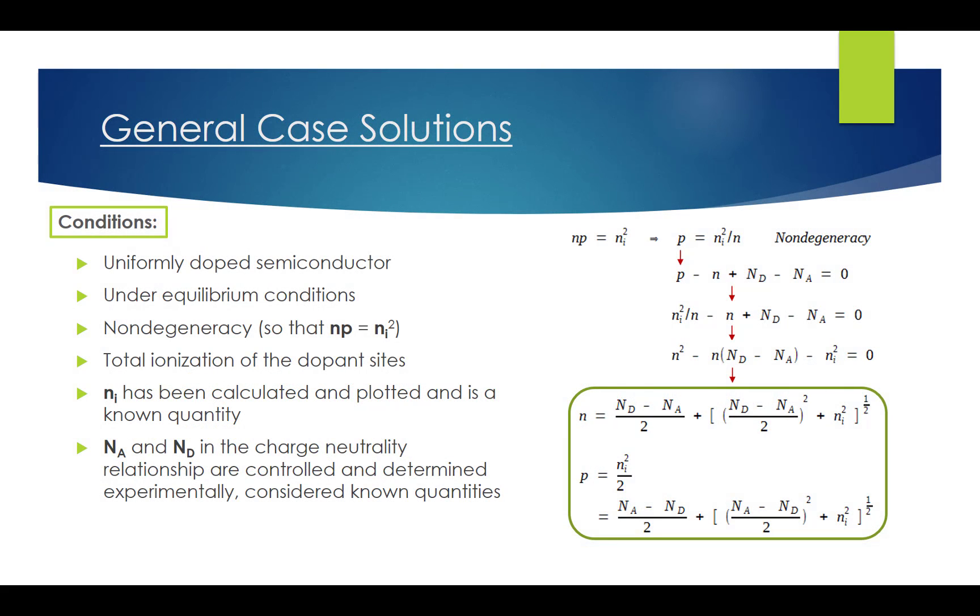The intrinsic semiconductor concentration ni has been calculated and plotted and is a known quantity. Also, the total number of donor atoms or sites per cubic centimeter Nd, and the total number of acceptor atoms or sites per cubic centimeter Na, both appear in the charge neutrality relationship, are typically controlled and determined experimentally, are also known quantities.